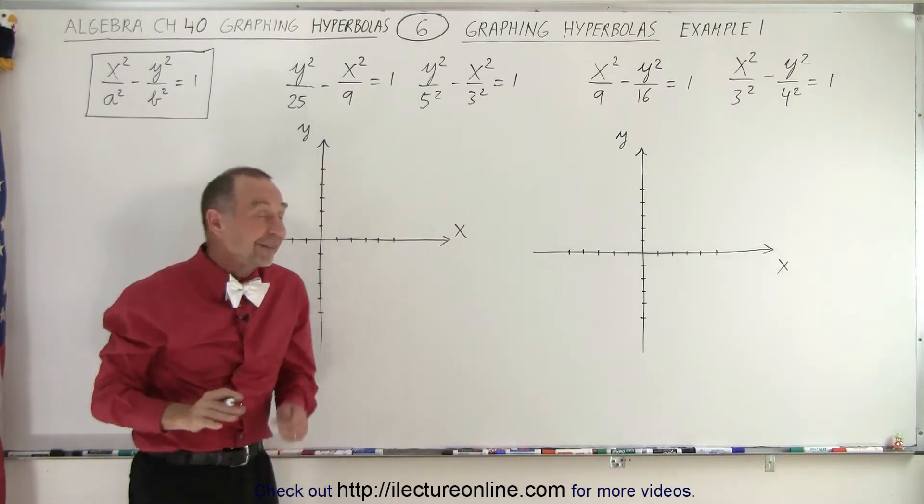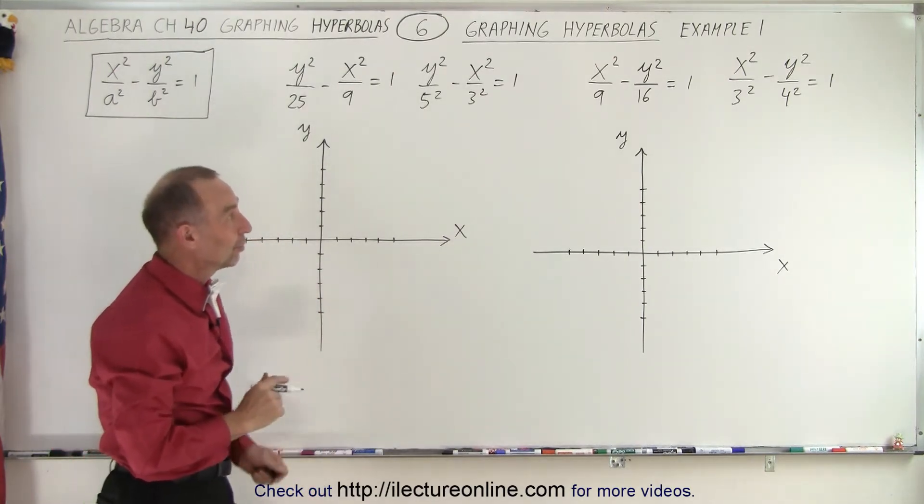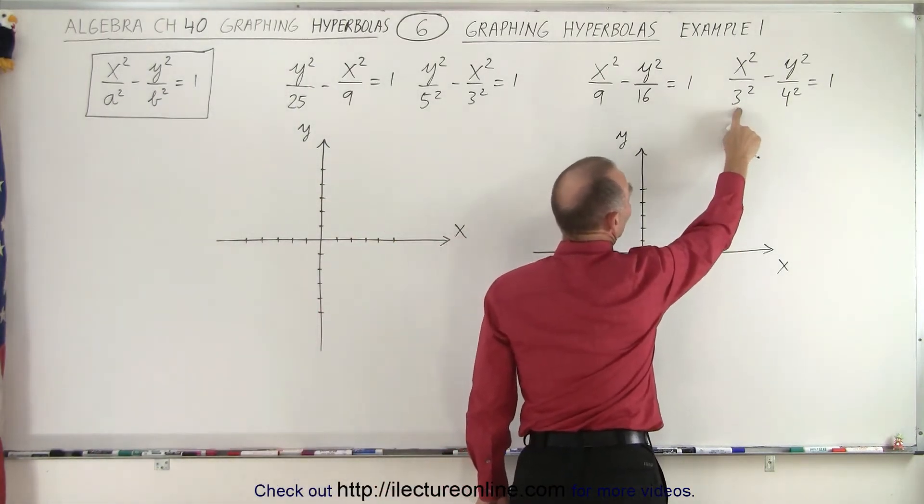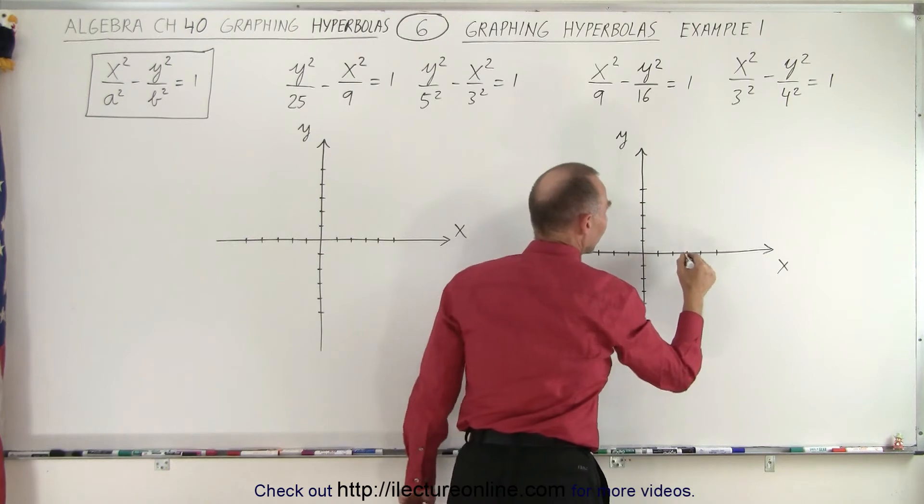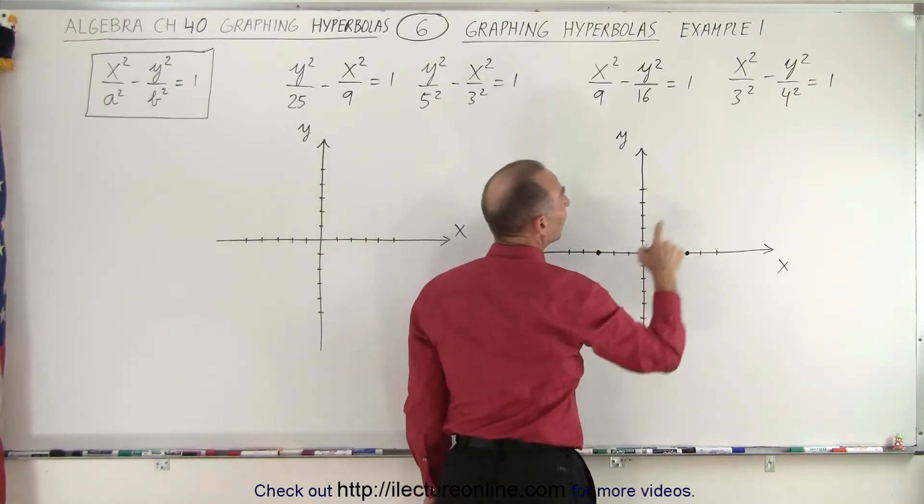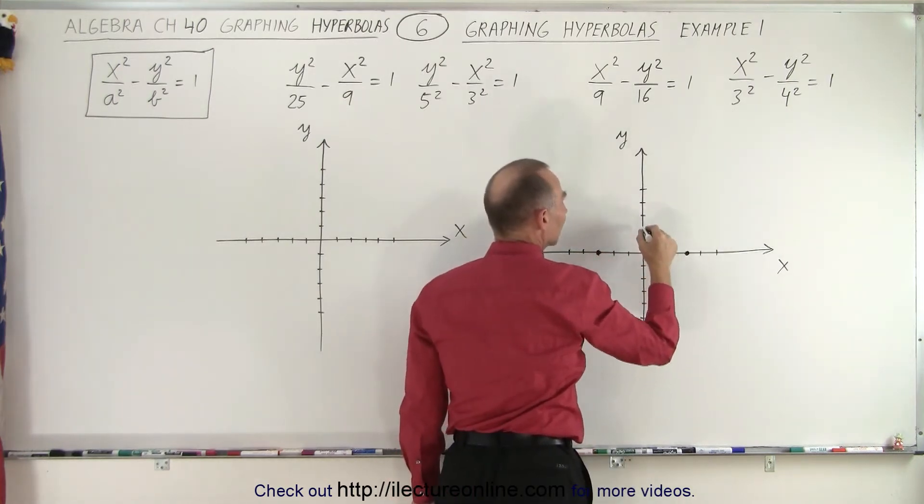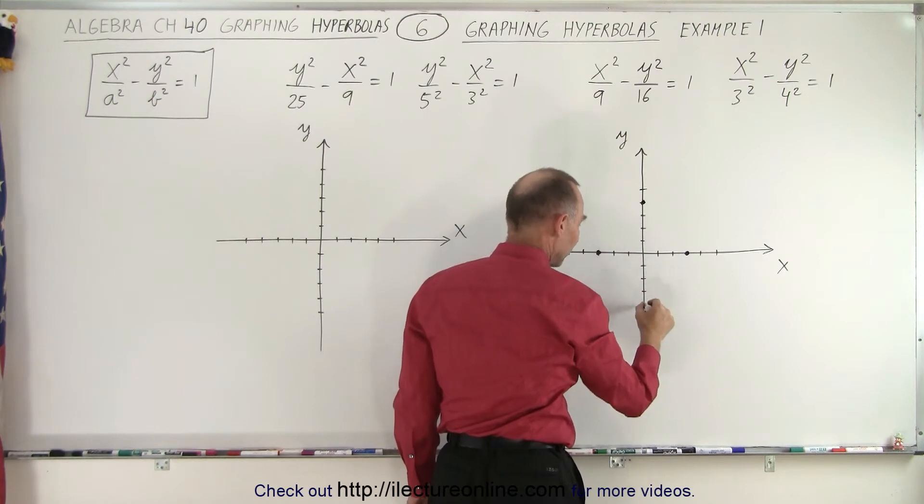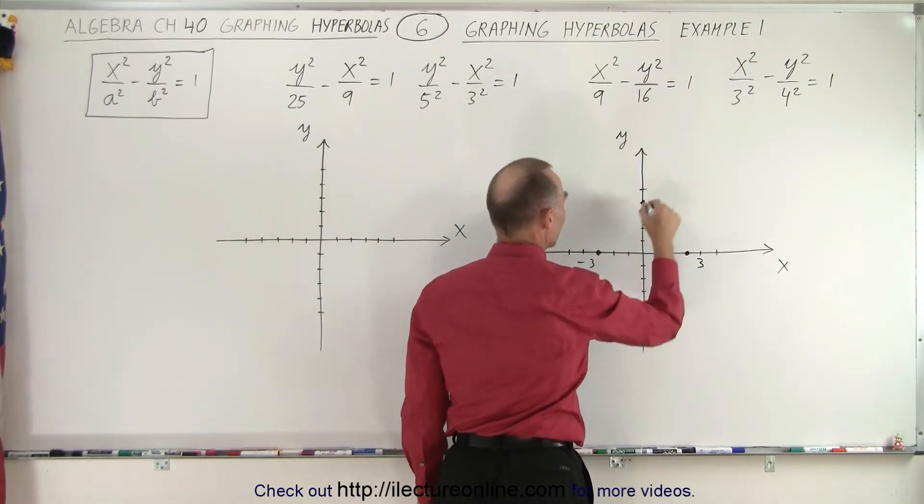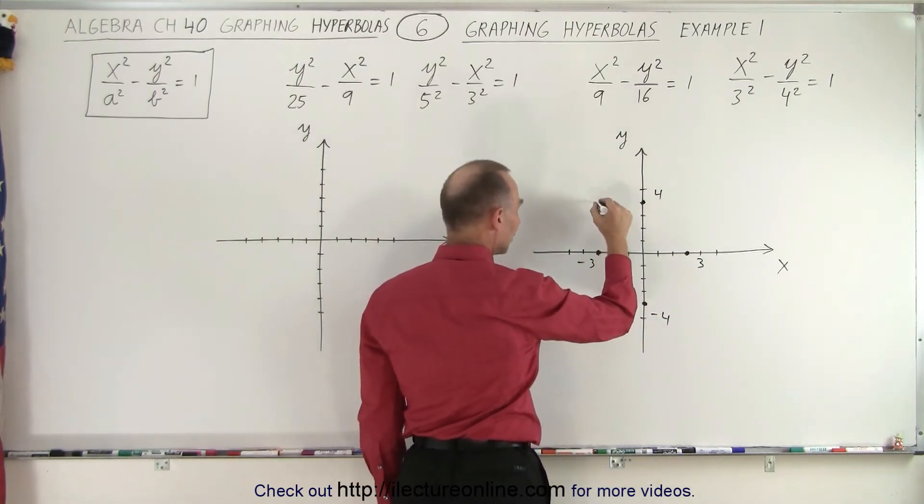Why do we do that? Well, it makes it easier to draw the box and to identify the size of the box. So here we realize that we're going to start from the origin, move 3 units to the right and 3 units to the left to find the edge of the box in this direction. And we're going to move 4 units up and 4 units down to find the size of the box in this direction. So plus 4, 1, 2, 3, 4, minus 4 like this. So this is 3, negative 3, 4, and negative 4.